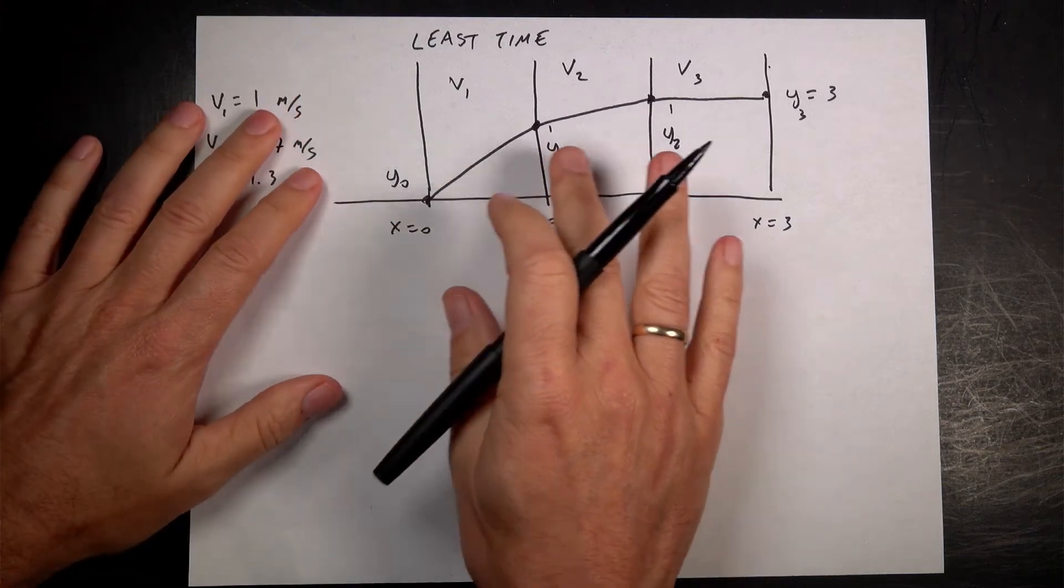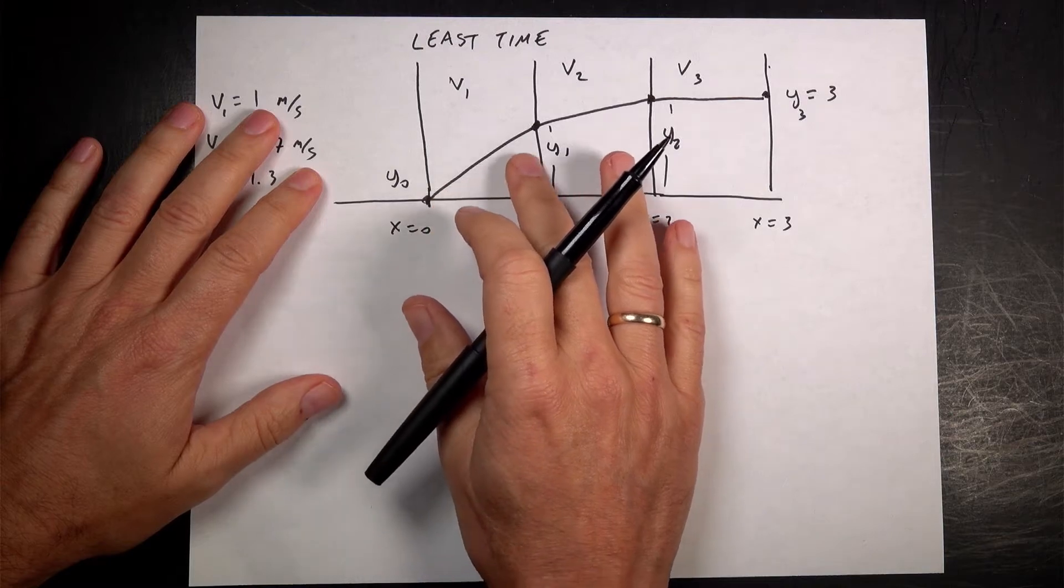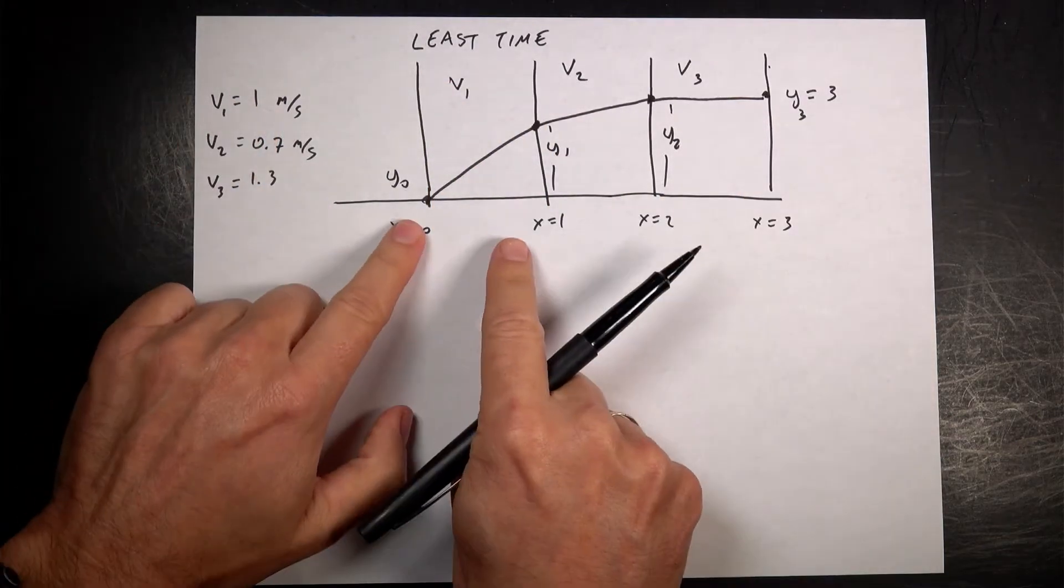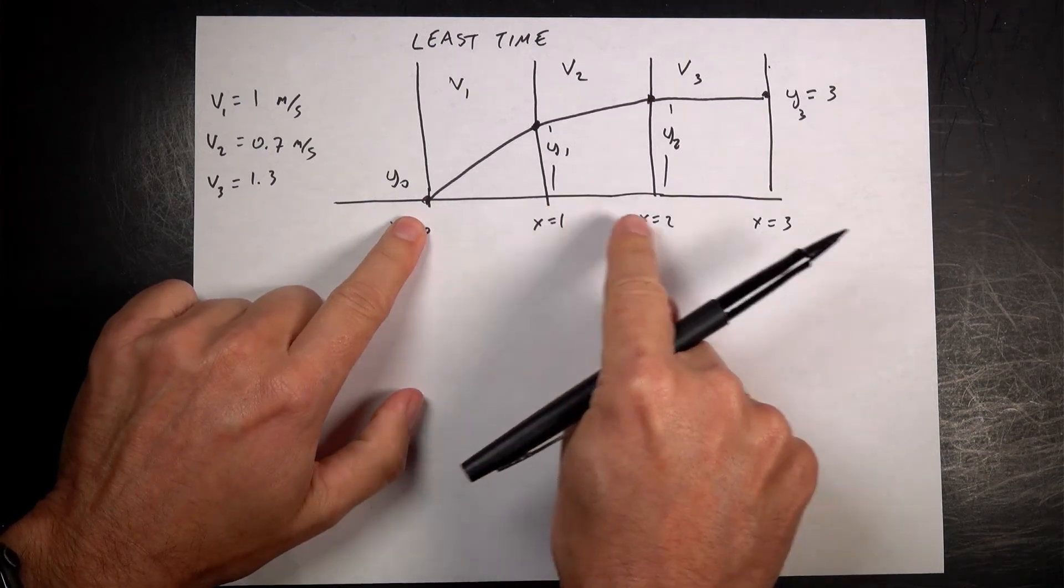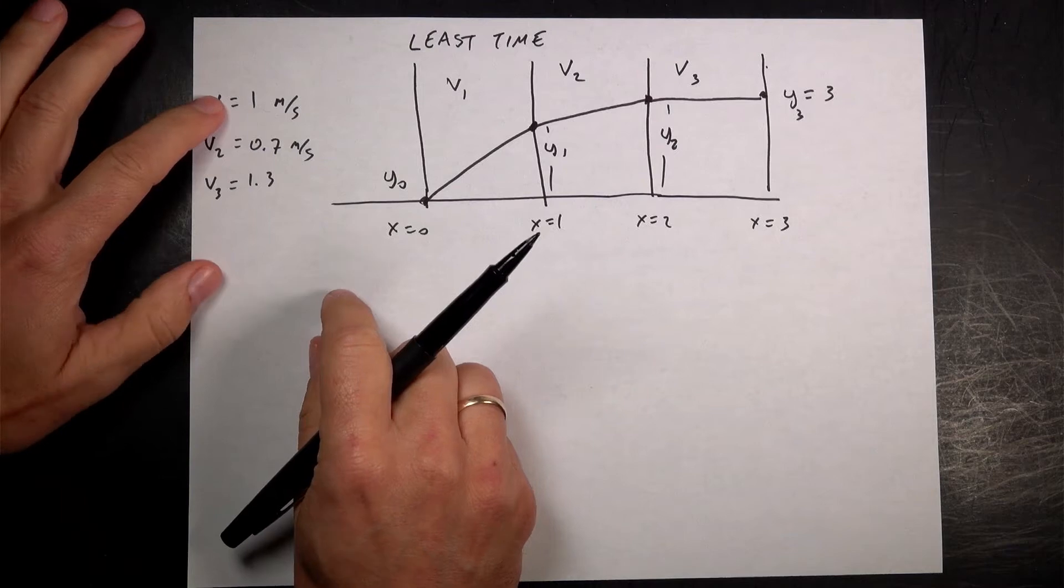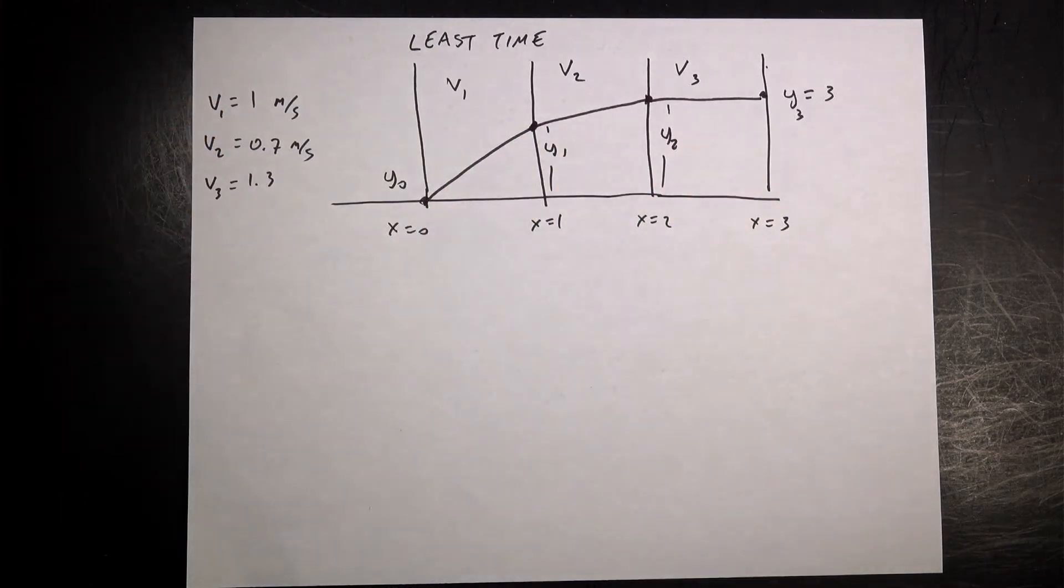There are three different surfaces and an object can travel on those three surfaces with three different speeds, V1, V2, and V3. So I space these out X equals 0, 1, 2, 3 meters if you want to. I don't really care. And then the speeds I picked 1, 0.7 and 1.3, just for fun. We can change those up.